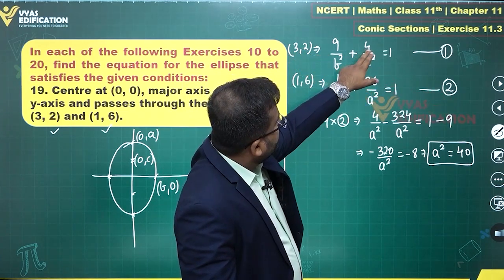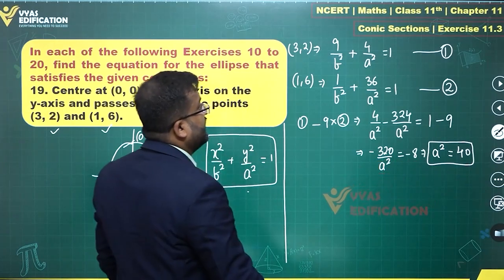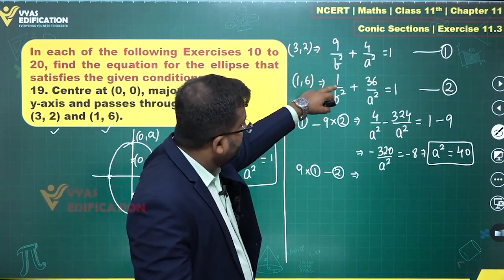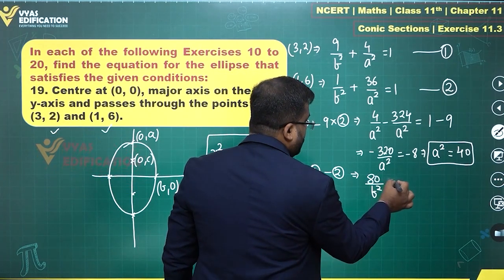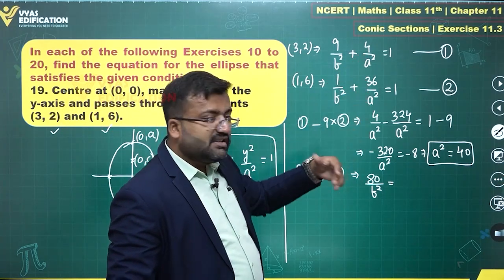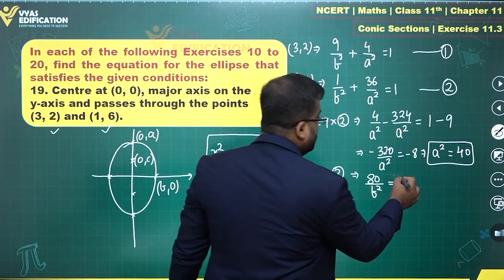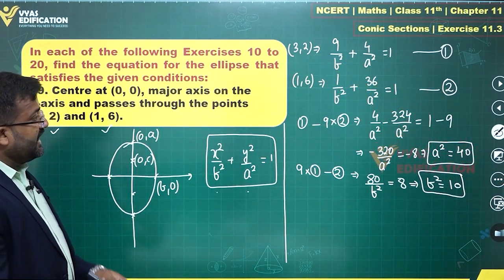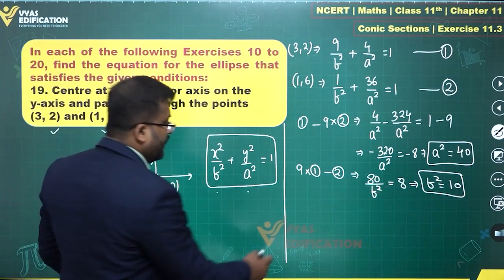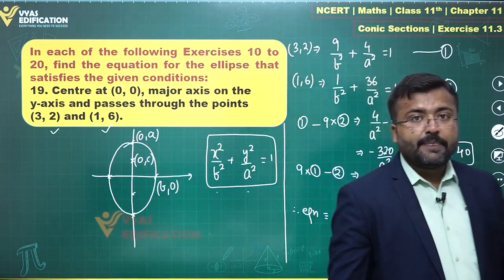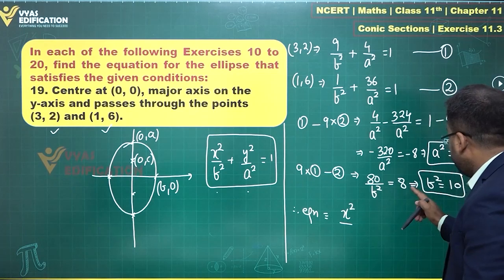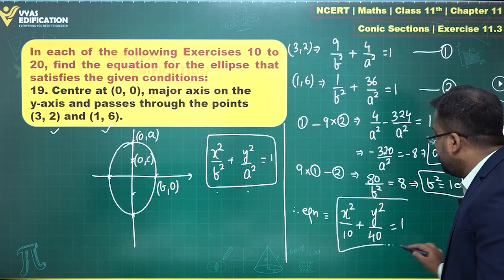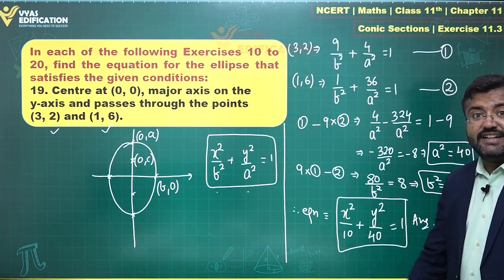Since 4 times 9 is 36, I can multiply equation 1 by 9 and subtract equation 2 to eliminate a². So 9 times equation 1 minus equation 2 gives 80 upon b², with the a² terms cancelling, equals 8. This implies b² equals 10. Once we have a² = 40 and b² = 10, the equation of the ellipse is x² upon 10 plus y² upon 40 equals 1. This is the required answer for question 19.